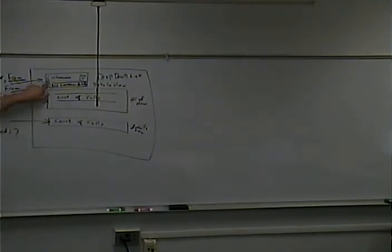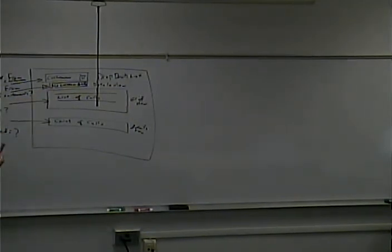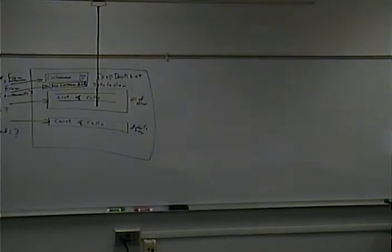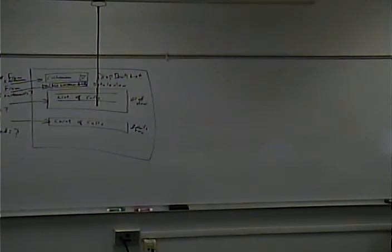This control needs to show all customers. This one needs to show the one customer that matches the customer in the drop-down. That's two different descriptions, so that's a different data source. This shows all the calls for the selected customer - that's different still. And then, finally, a count of the calls from the customer - that's different still.